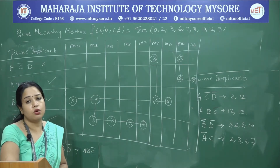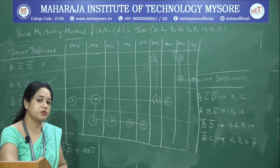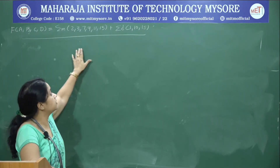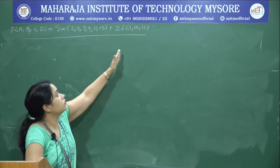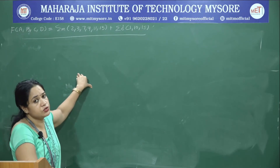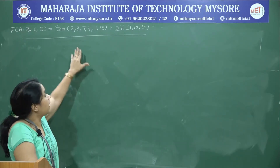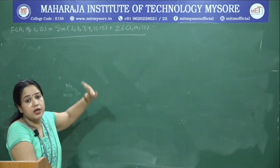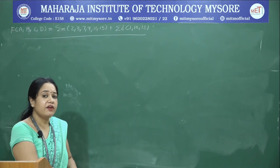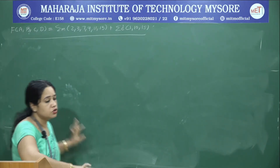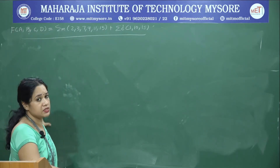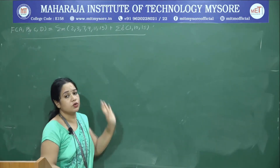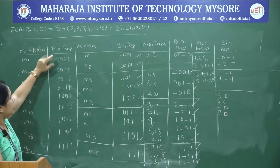We will now consider how to deal with don't care terms in an incompletely specified function. We consider one more example with minterms 2, 3, 7, 9, 11, 13 along with don't care terms 1, 10, and 15. In the first step, don't care terms are treated equally with minterms when identifying prime implicants. While identifying essential prime implicants in the second step, we skip mentioning the don't care terms.